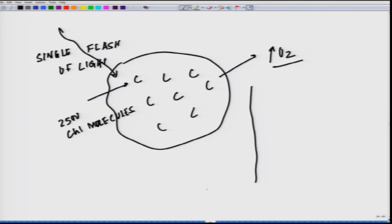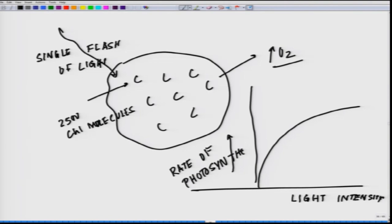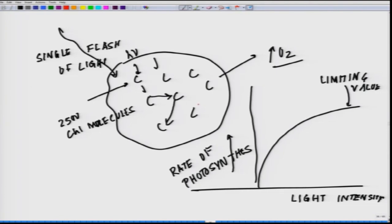One can calculate the energy input from a single flash. If you draw a graph with rate of photosynthesis on the axis, there is a limiting value. This gave birth to the concept that photons absorbed by many chlorophyll are funneled to a reaction center.